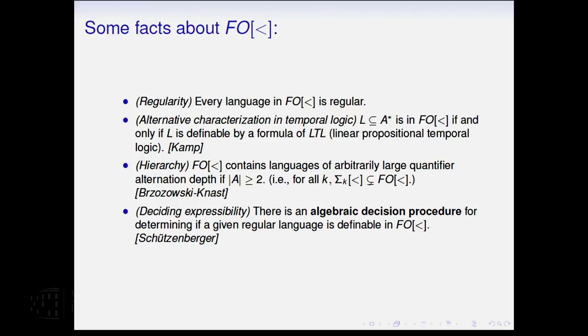There is a hierarchy within this based on alternation of quantifiers, and that hierarchy is infinite. It means that for every k, as long as the alphabet has at least two letters, there are languages here of arbitrarily large alternation depth. They're outside of sigma k.